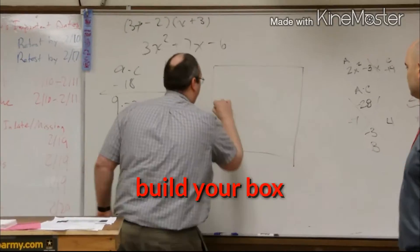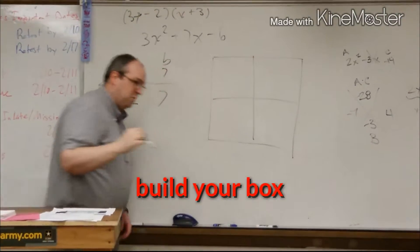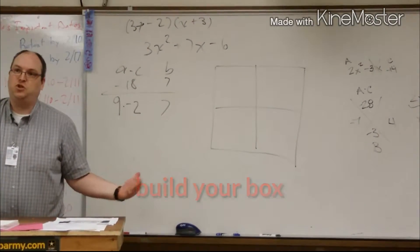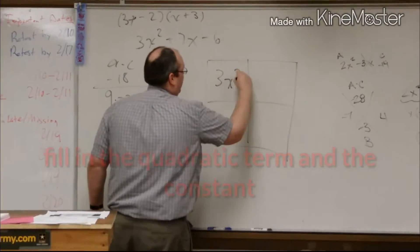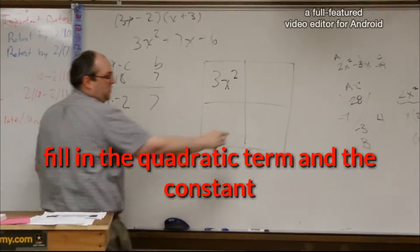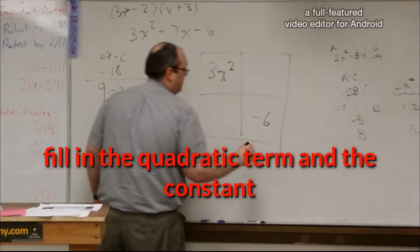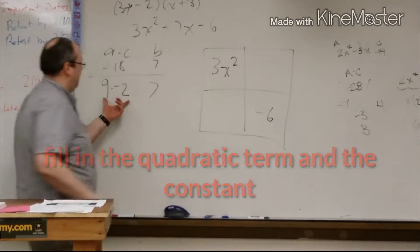Then we build our box, because a lot of them learn how to multiply using the box. It's always the ax squared term in the upper quadrant, the lower quadrant is always the constant term. Then these two boxes come from these two factors.